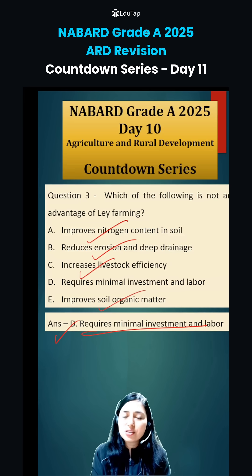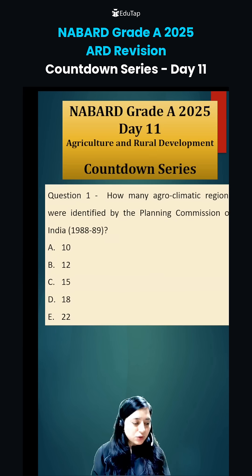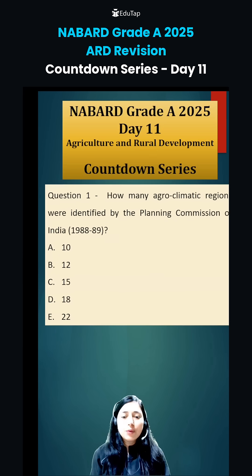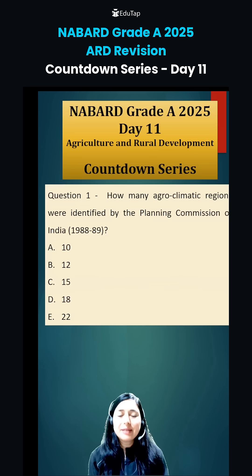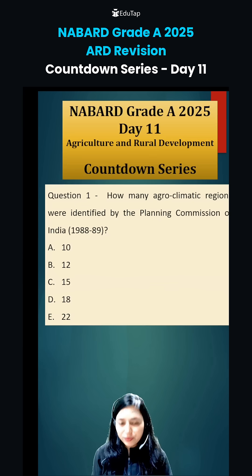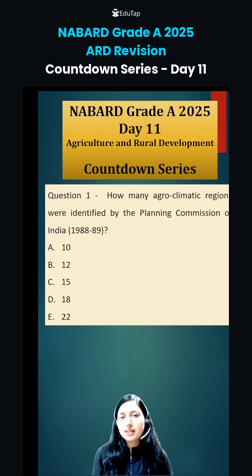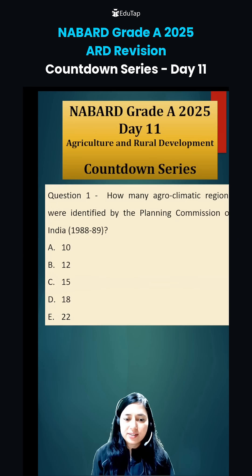With this, we have completed the answers of Day 10. Let's quickly see the questions of Day 11. The first question is: how many agro-climatic regions were identified by the Planning Commission of India? Options are 10, 12, 15, 18, and 22. Very important — do learn about agro-climatic regions and then let me know the answer.